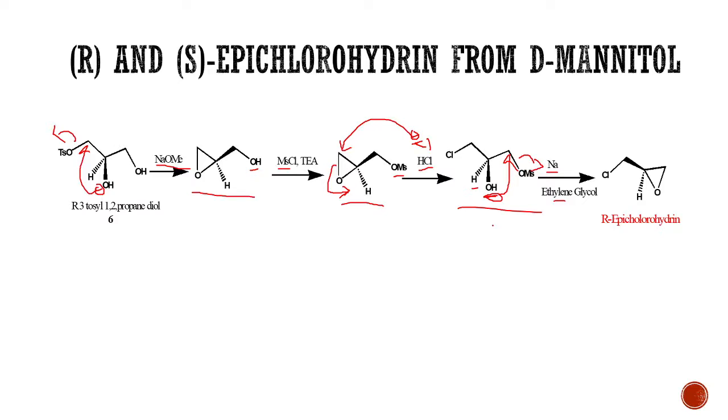OH will be formed to this alkoxide and it will attack over here, and OMs will be a good leaving group. Among OMs and Cl, OMs is a good leaving group, so we get preferentially R-epichlorohydrin.